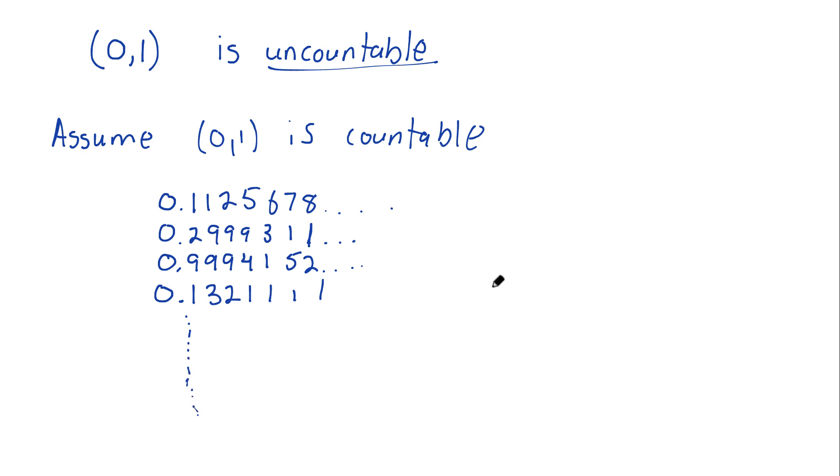So you would continue this way forever. And the assumption here is that if you did this forever, if you made this list, you could write every single number between zero and one, all of these decimals. And you know, these decimals could go out forever. Maybe some of them terminate, but they can go on forever as well. So I'm assuming I can create such a list. That's what countable would mean.